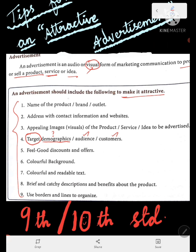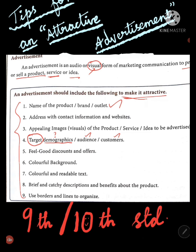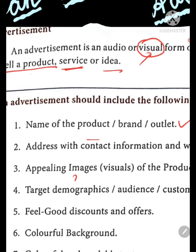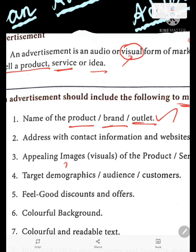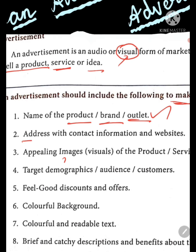To make it attractive, the first and foremost point is: you have to write the name of the product, brand, or outlet. It should be in bold or dark letters. You have to clearly write the name of the product, brand, or outlet.